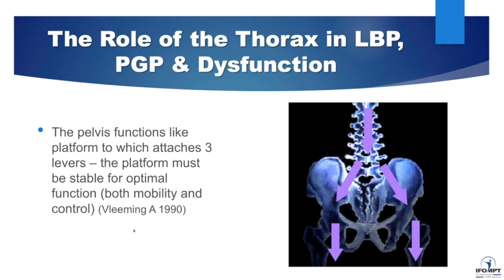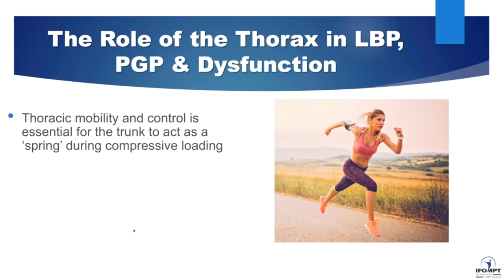Thoracic rotation is probably one of the key movements we need to assess in the thorax, because it's rotation between the thorax and the pelvis that allows us to convert the trunk into a spring, which shock absorbs during impact loading tasks such as running. It gives us power for both kicking and throwing. When we're looking at sports that involve hitting a ball, swinging a club, throwing anything, running, or twisting, the relationship of the thorax and its ability to rotate relative to the pelvis is critical for function.